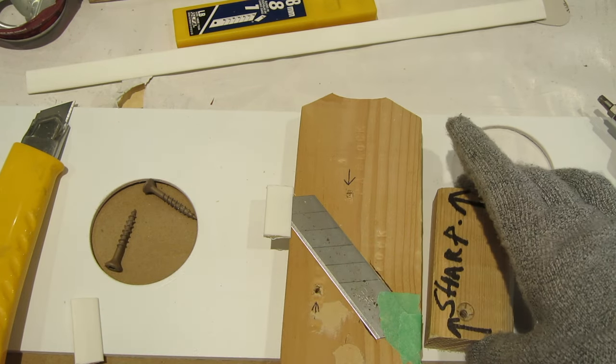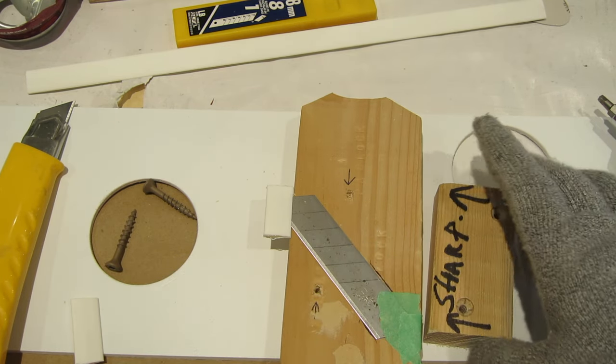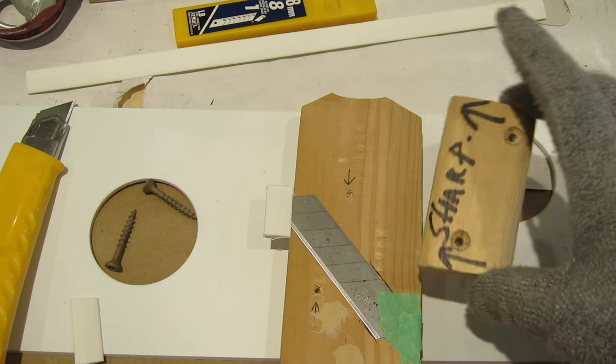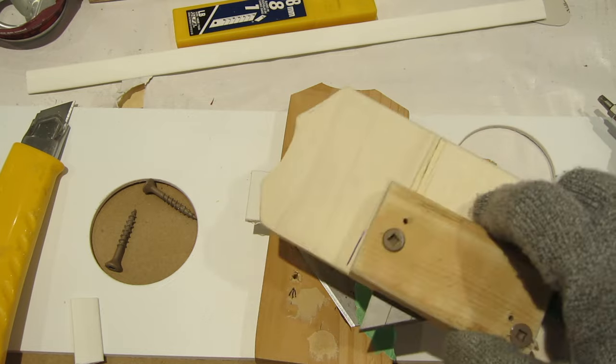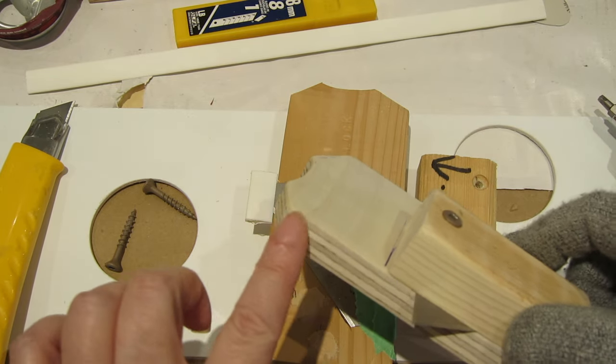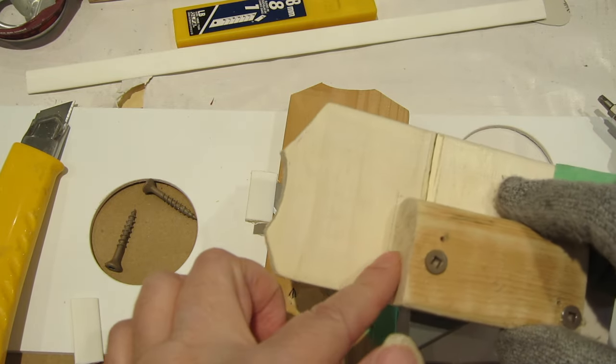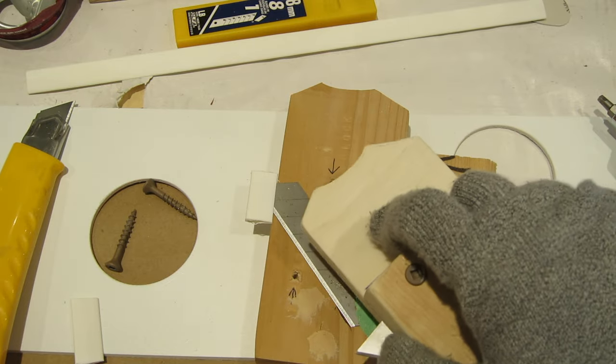Once you've got your two pieces, you're going to want to take some sandpaper and sand. Now this is our prototype so we've yet to sand it, but as you can see in this next one here, we've rounded the edges and it's beautifully sanded. There's nothing rough at all.